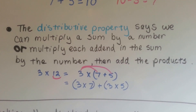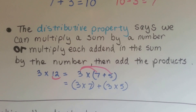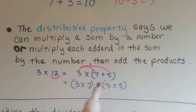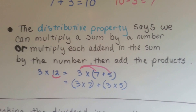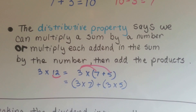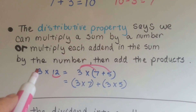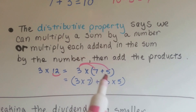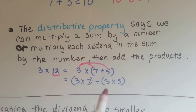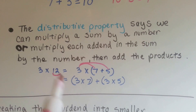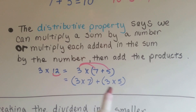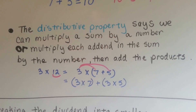The distributive property says that we can multiply a sum — that would be the 12 — by a number, or we could multiply each addend of 12, which are 7 and 5, by that number — that 3 — and then add the products together. So we can either do 3 times 12, or we can do 3 times 7 plus 5, which equals 12. Either way, it's going to equal 36. 3 times 7 is 21, plus 3 times 5 is 15. 21 and 15 is 36.